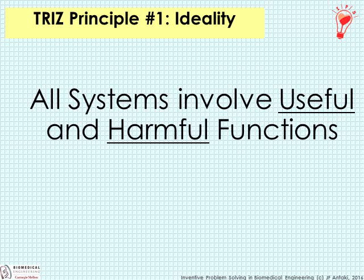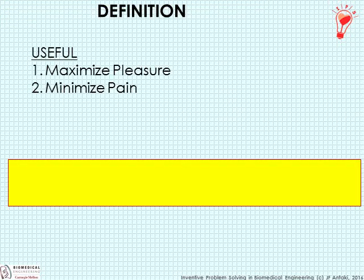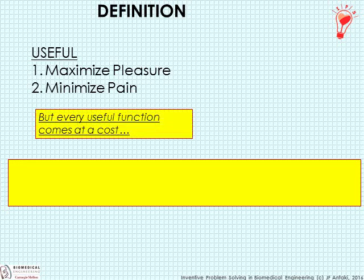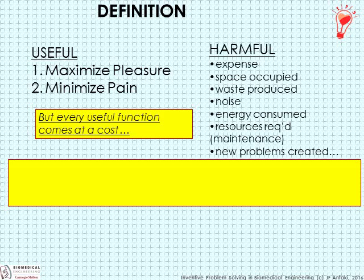Let's get started with the first principle of TRIZ, known as Ideality. It's part of the very foundation of TRIZ and is based on the tenet that all systems involve useful and harmful functions. When we say useful, we're talking about features that maximize pleasure or minimize pain. Harmful functions are the costs — expense, space occupied, waste produced, noise, energy consumption, required maintenance, or any new problems created.